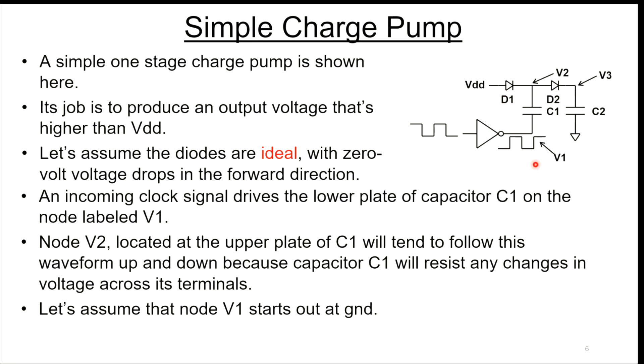If we have an incoming clock signal, it drives the lower plate of capacitor C1 up and down. The upper plate of capacitor C1 is going to try to follow that voltage because the capacitor will resist any changes in voltage across its terminals. Let's assume node V1 starts at ground.